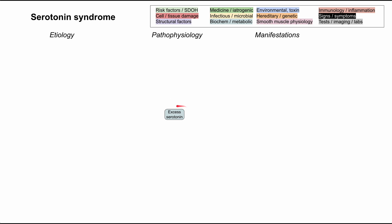The central problem here is that you have excess serotonin, and this usually comes from serotonergic drugs. There's a long list of these, and it's worth going through them so that you're able to recognize which medications contain serotonin or have serotonergic activity. The first bucket, antidepressants, is probably the biggest and most major for serotonin syndrome.